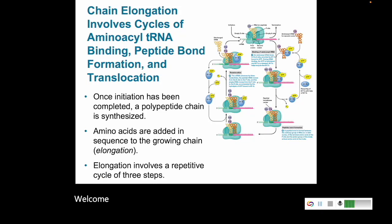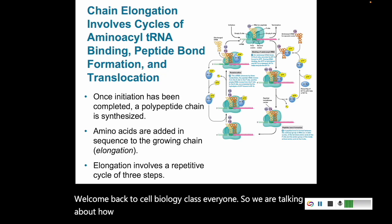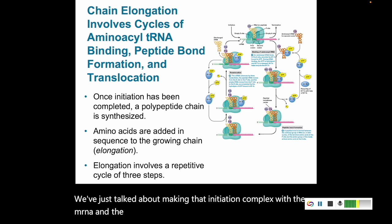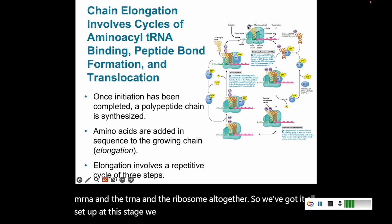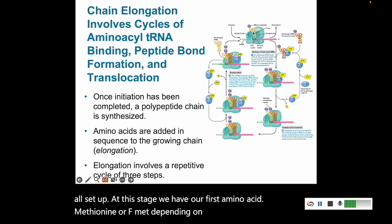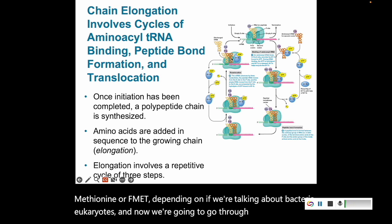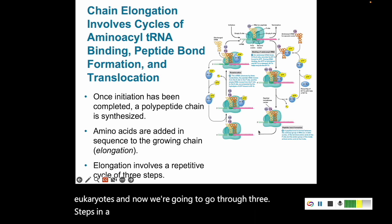Welcome back to cell biology class. We are talking about how proteins are being created — the process of translation. We've just talked about making the initiation complex with the mRNA, the tRNA, and the ribosome all together. Now we're going to go through three steps in a cycle to add each of our additional amino acids for the rest of that protein.